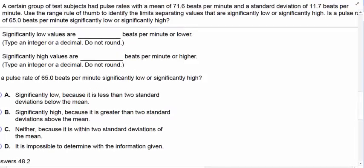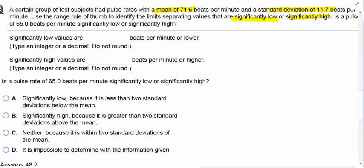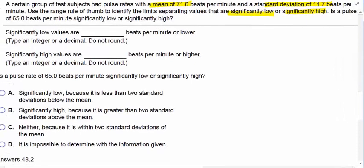A certain group of test subjects had pulse rates with a mean of 71.6 beats per minute and a standard deviation of 11.7 beats per minute. Use the range rule of thumb to identify the limits separating the values that are significantly low and significantly high. Is a pulse rate of 65 beats per minute significantly low or significantly high?